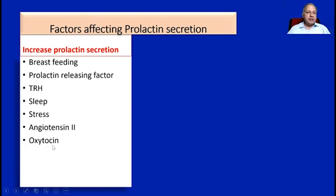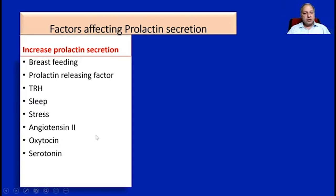Oxytocin is the hormone that causes contraction of myoepithelial cells of the mammary gland or breast tissue, and this also causes stimulation of prolactin hormone secretion, ultimately causing milk synthesis. Therefore, milk synthesis and its ejection keep on increasing during the lactational period. There is also the effect of serotonin and opioids, and importantly, dopamine antagonists or dopamine blockers are going to cause inhibition of prolactin secretion.